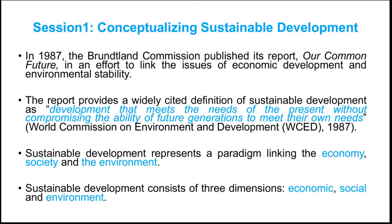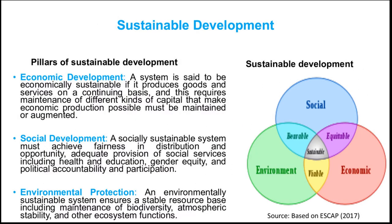Sustainable development represents a paradigm shift in linking the economy, society, and the environment. These are the three pillars of sustainable development: economy, society, and the environment. Economic development is one of the pillars. A system is said to be economically sustainable if it produces goods and services on a continuing basis, and this requires maintenance of different kinds of capital that make economic production possible — capital that must be maintained and augmented.